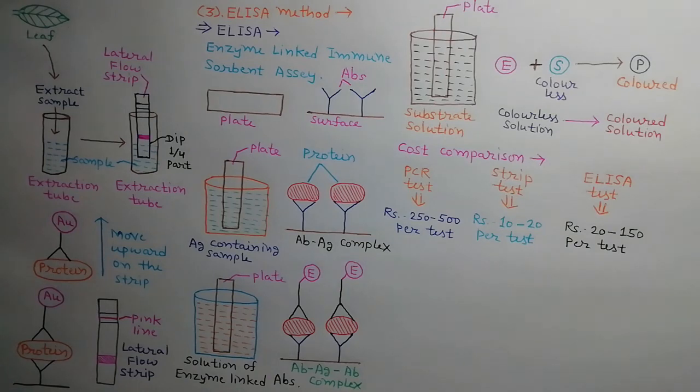So if we compare the cost of all three tests, then we find that cost of PCR test is RS 250 to 500 per test, cost of strip test is RS 10 to 20 per test, and cost of ELISA test is RS 20 to 150 per test. Hence, lateral strip test is the cheapest test in all three tests.